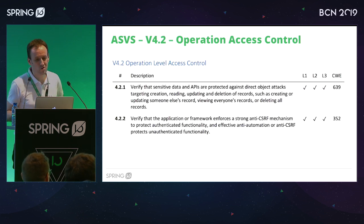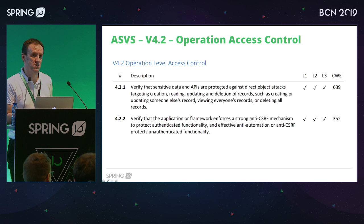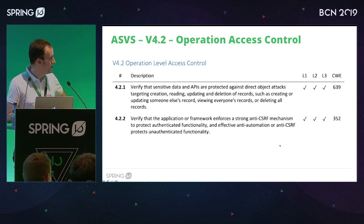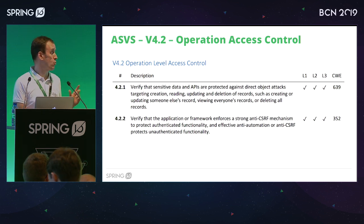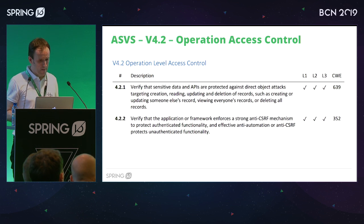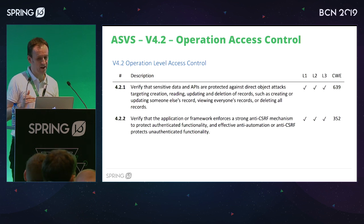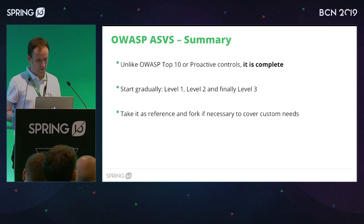For access control, ASVS says we have to verify access to resources against direct object reference, and it's mandatory for all levels. They also add a reference to cross-site request forgery in the access control section. You may know that in the previous OWASP Top 10, CSRF was included, and now it has been removed — but for each requirement, ASVS tells you which maturity level it applies to.